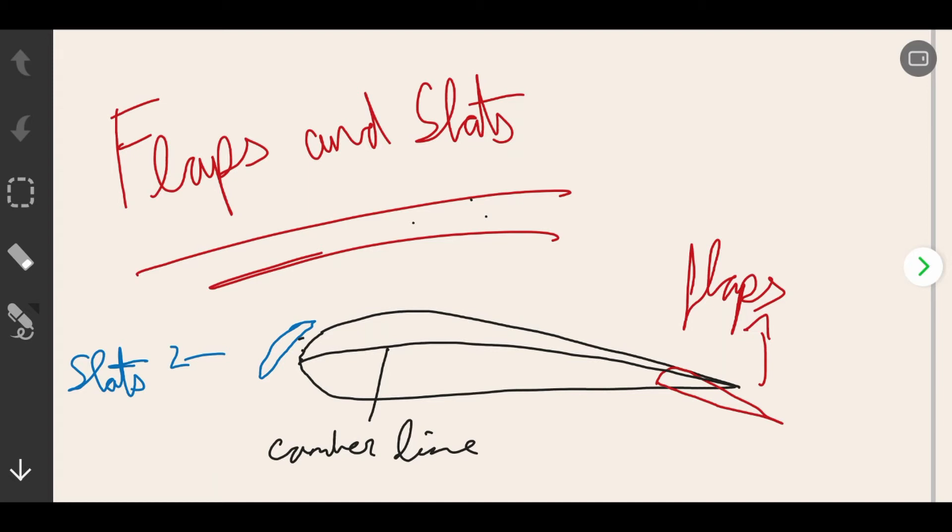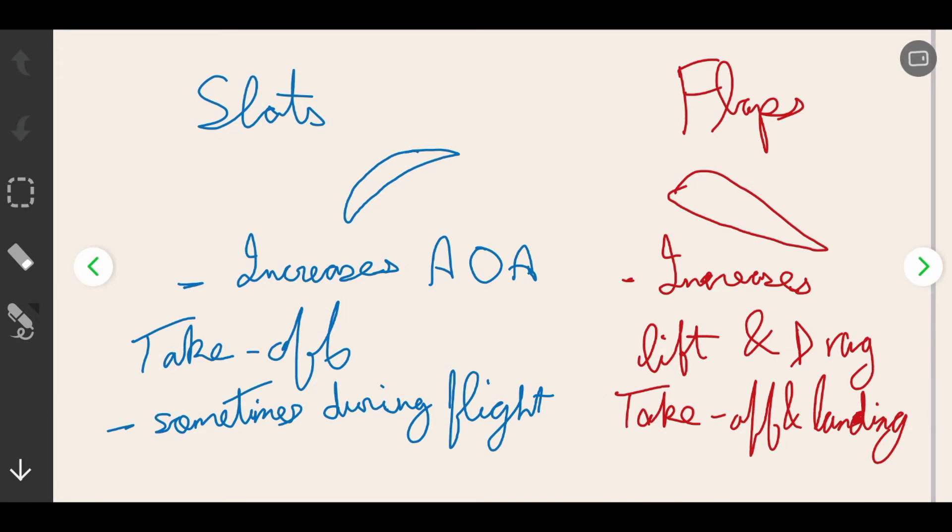Flaps are located at the trailing edge, but in some cases flaps are also used in the leading edge, which we will talk about in some other lesson. Slats and flaps are used basically for the same purpose.